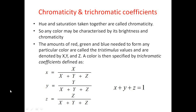Here we have another definition: tristimulus values. The amount of red, green, and blue required to form any particular color are called the tristimulus values, and are denoted as X, Y, and Z respectively. So, how much red is required is denoted by X, how much green is required is denoted by Y, and how much blue is required is denoted by Z.